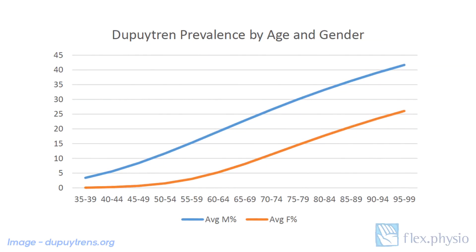This graph of data from the United States shows the increased incidence of Dupuytren's disease in men and women as they get older. It is estimated that over 10 million people in the US have the condition, or about 3% of the population, but the majority of those people don't have bent fingers yet. This graph is from the website Dupuytrens.org, which is full of useful information about the condition. Look in the video description for a link.